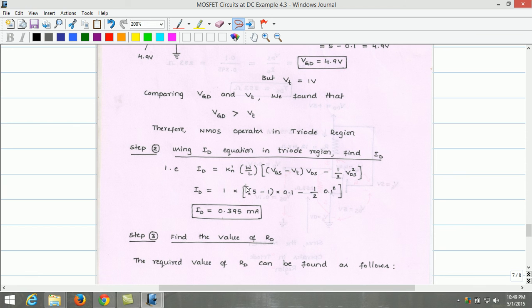Substituting the given data, KN dash into W by L equals 1, VGS is 5 volt, VT is 1 volt, VD or VDS is 0.1. So simplifying this, ID, we found that it is 0.395 milliampere.